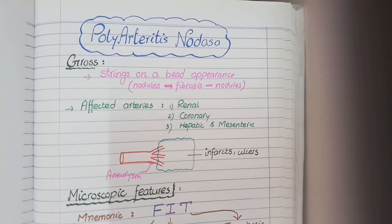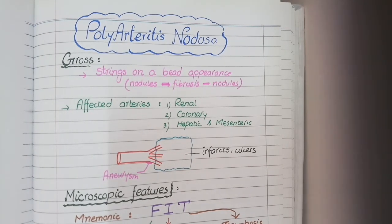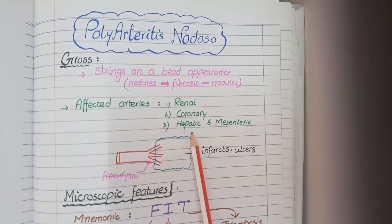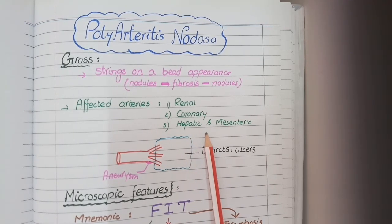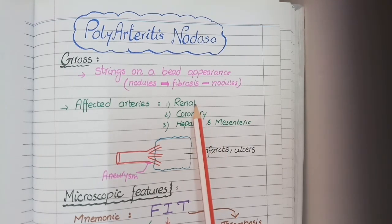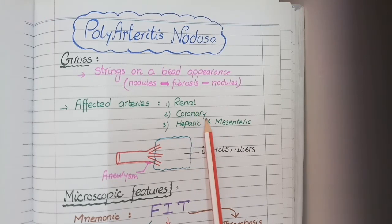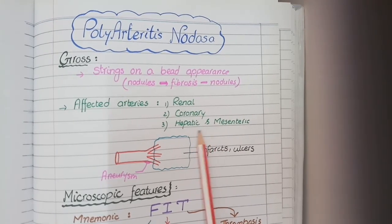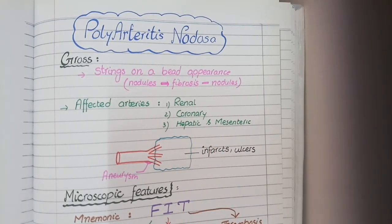Coronary artery involvement can even result in myocardial infarction. The third important involvement is the hepatic and mesenteric arteries, which supply the intestines. Peristalsis of the intestines will induce abdominal pain. So the three commonly involved arteries are renal arteries, coronary arteries, and hepatic and mesenteric arteries.